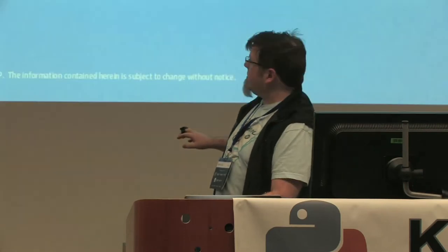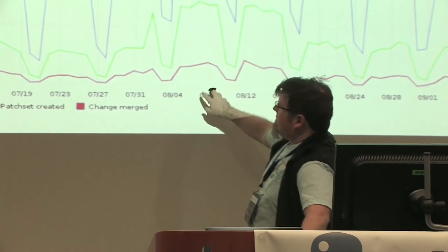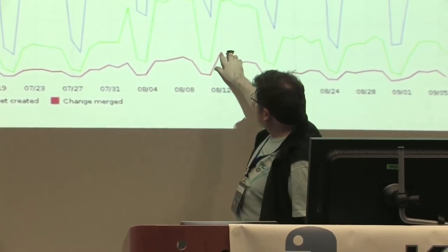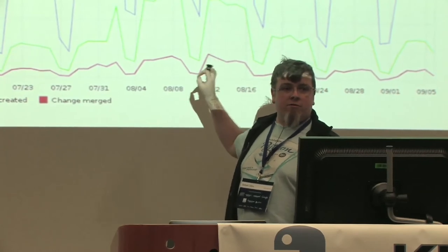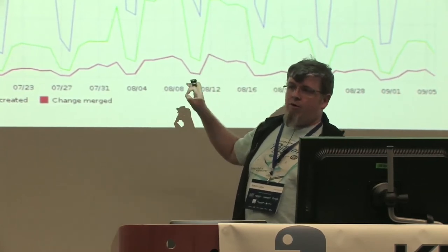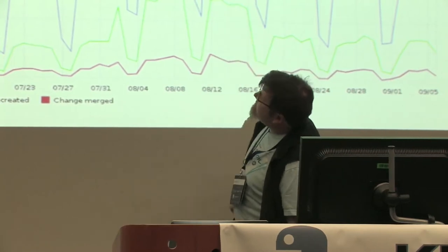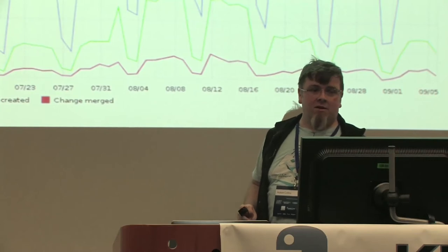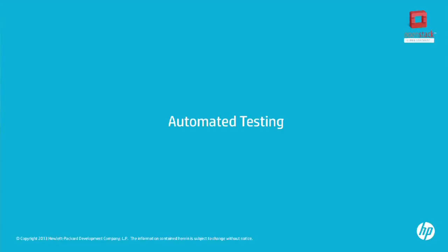If you look at the number of changes that merged — say 500 merged on one day — that represents 500 test runs of things as they merge, plus another 1,500 test runs being done for the things that were put forward and hadn't actually gone through. So automated testing — it's a wonderful thing.